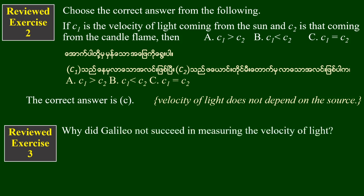Review section 3: Why did Galileo not succeed in measuring the speed of light?